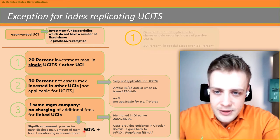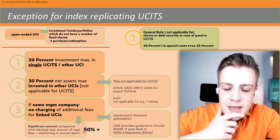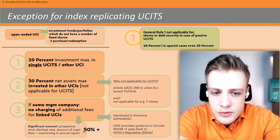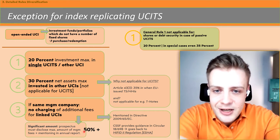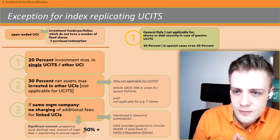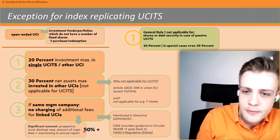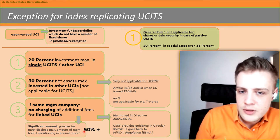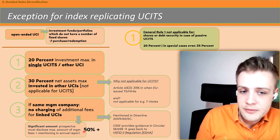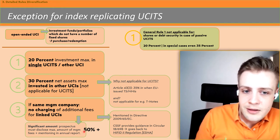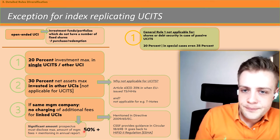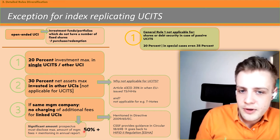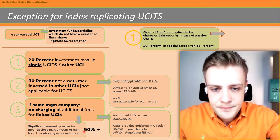Here we start with the first exception applicable for index replicating UCIs. The first — and really the only main one — is that the general rule one is not applicable for these. General rule one was the 10% rule. In case of an index replicating UCI — another way to call it, a passive UCI — shares of that security can be up to 20%, and in special cases even 35%.